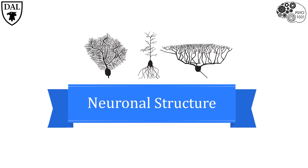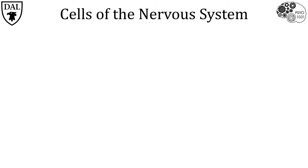Neurons are the building blocks of the nervous system, so a basic understanding of how they work is crucial to the study of thought, behavior, and emotion. Before we talk about neurons, we'll first give a nod to another important cell type: glia cells.